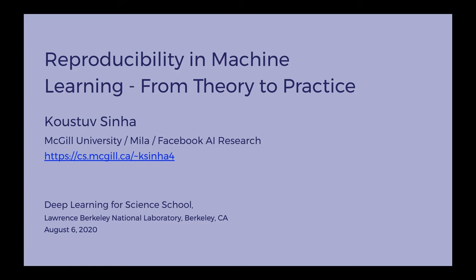Gustav's primary interest is in advancing logical generalization capabilities of neural models in discrete domains such as language and graphs. He's also involved in organizing the annual machine learning reproducibility challenge and he's serving as a reproducibility co-chair at NeurIPS 2019 and 2020. Thank you so much for the nice introduction, Mustafa.